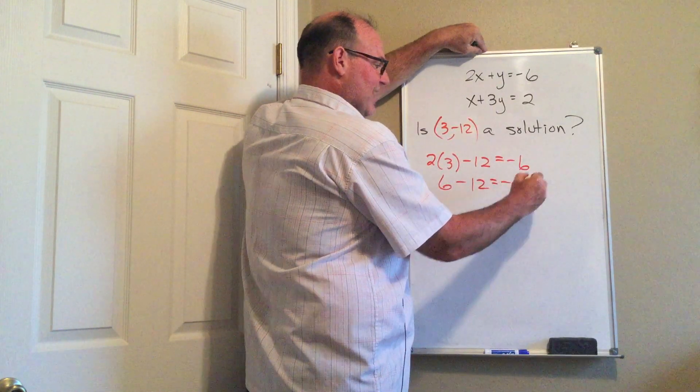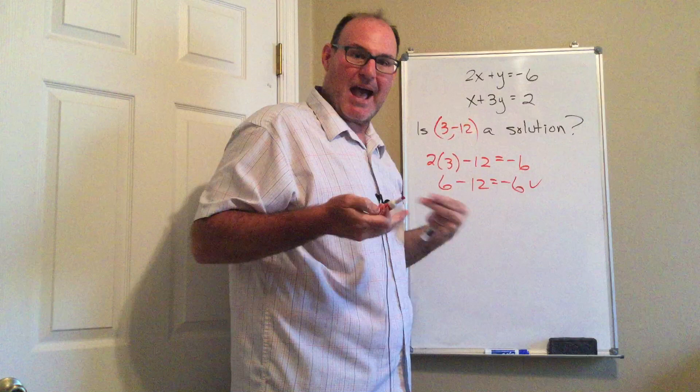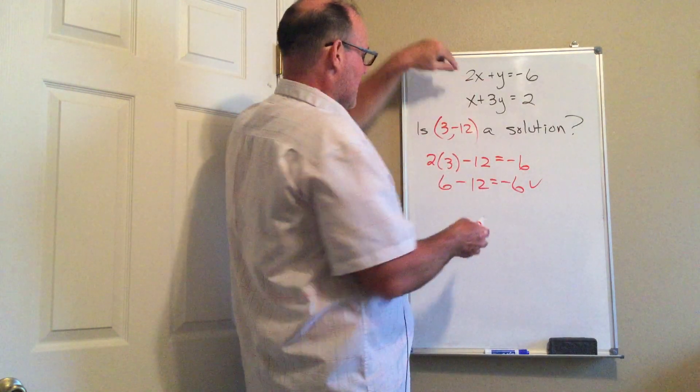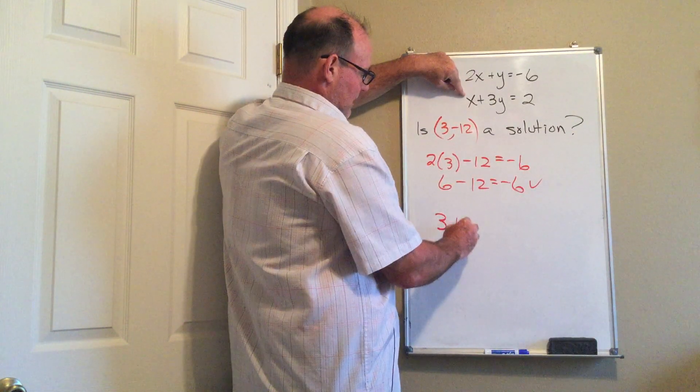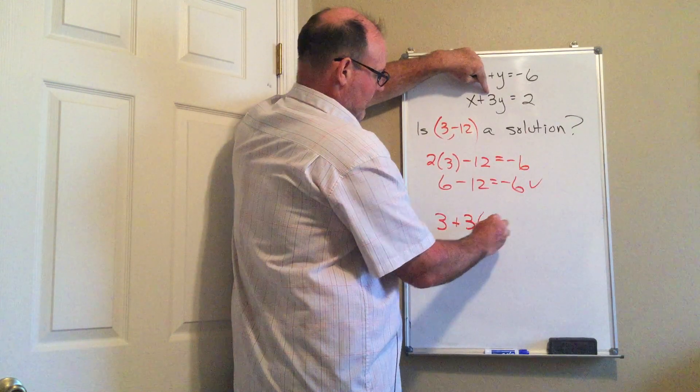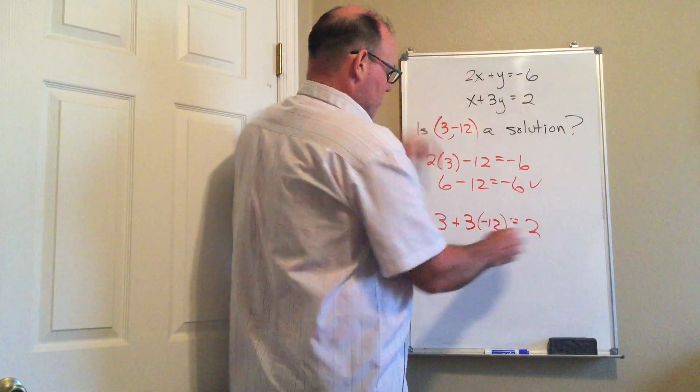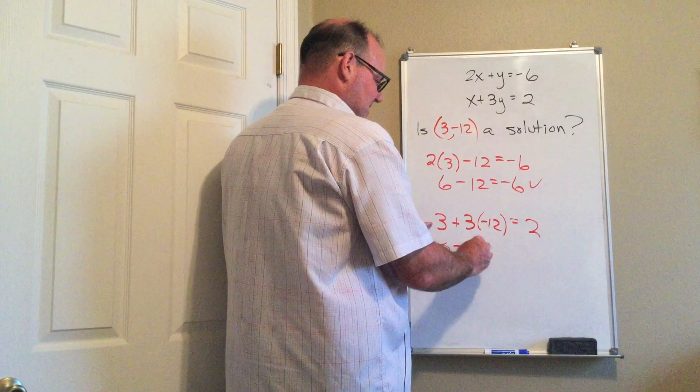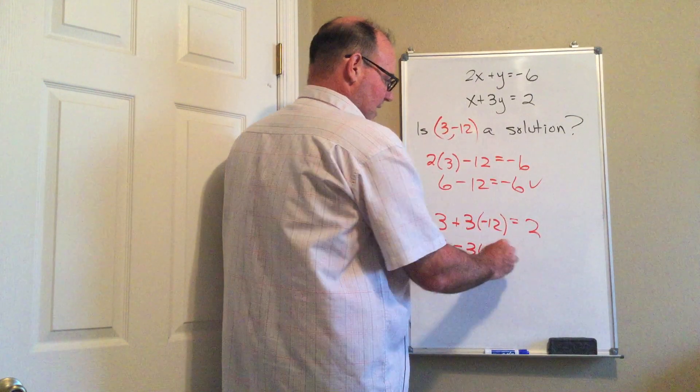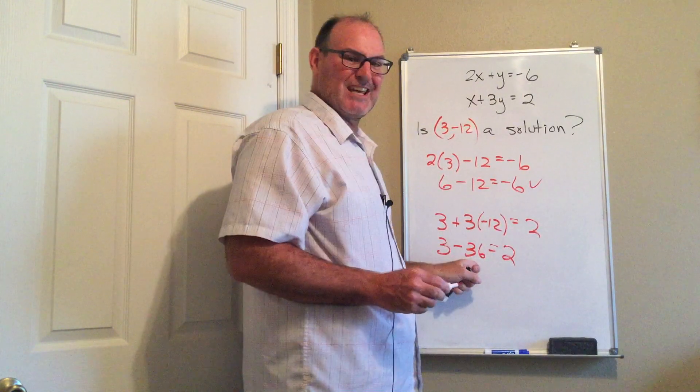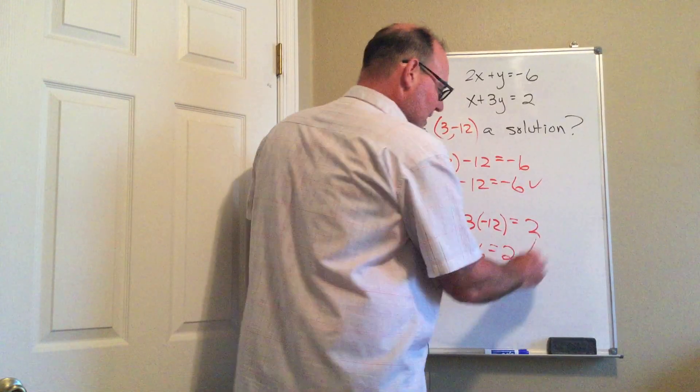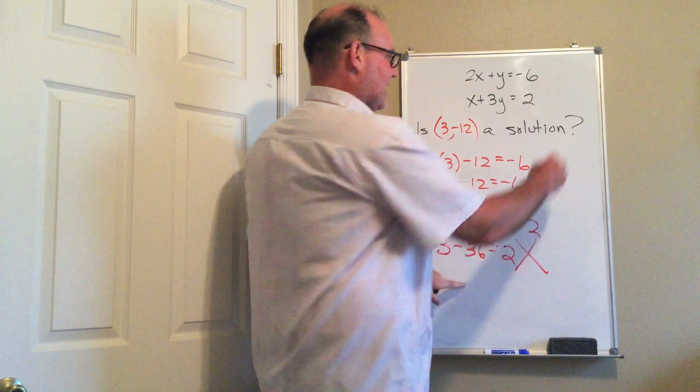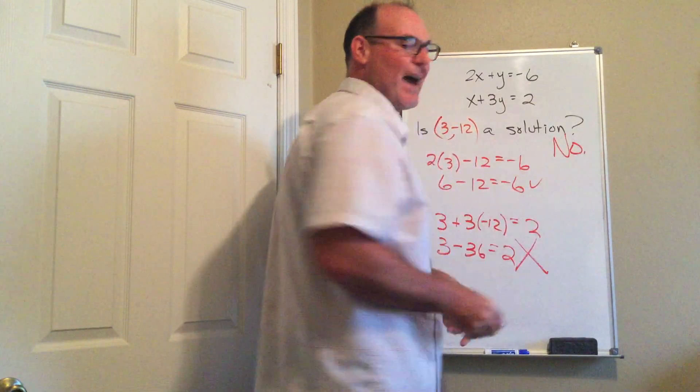Well I got a true statement for the first one, but again it has to satisfy both equations. So when I put 3 and (-12) into the second equation, notice I have 3 minus 36. 3 minus 36 is not equal to 2. So it does not satisfy the second equation. So the answer to that is no.